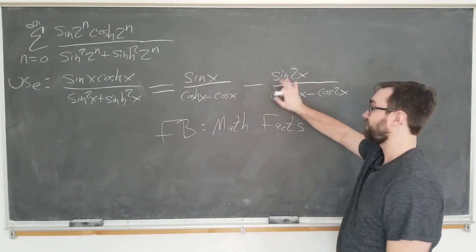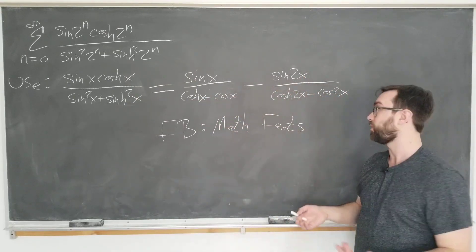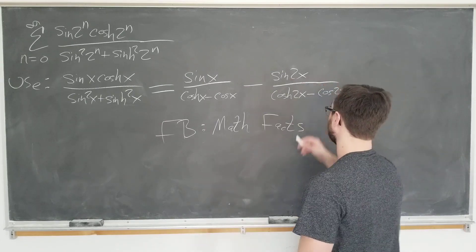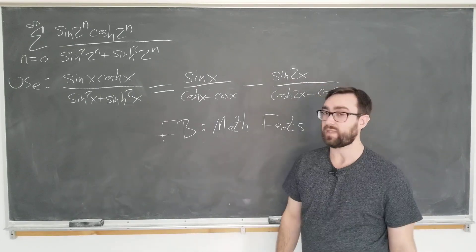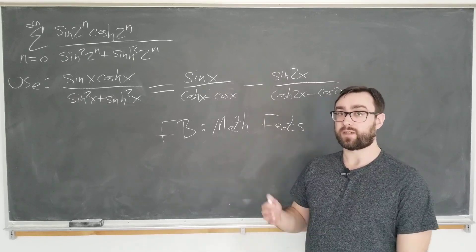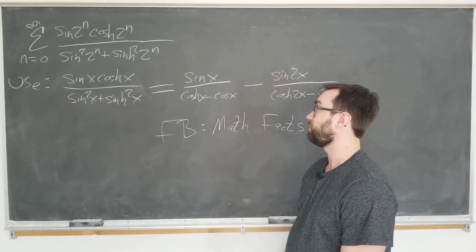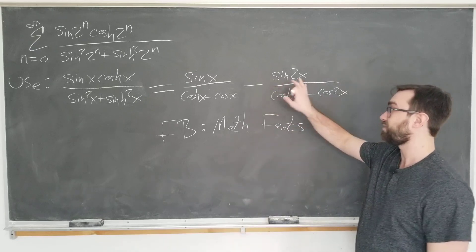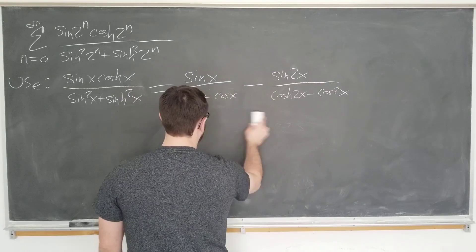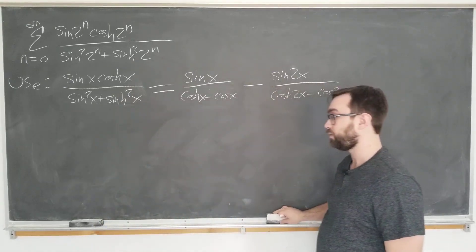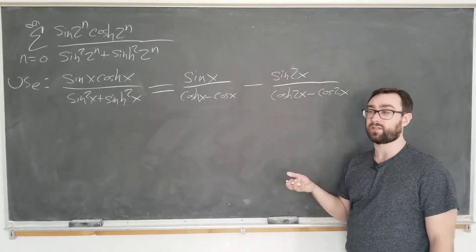minus the same thing with x being replaced by 2x. So we have sine 2x over cosh 2x minus cos 2x. Now, if you have studied infinite series and sequences before, say in a calculus class, you can immediately see from this identity where it might be going. In fact, we want to use this identity to show that this sum actually telescopes.